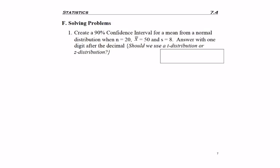Create a 90% confidence interval for a mean from a normal distribution when n equals 20, x̄ equals 50, and s equals 8. Answer with one digit after the decimal.